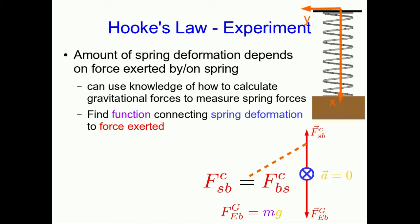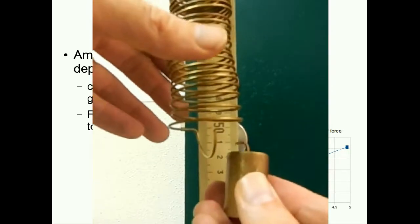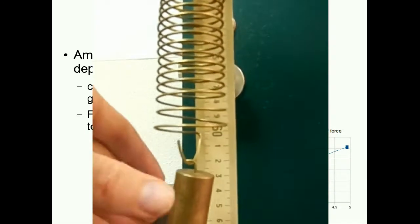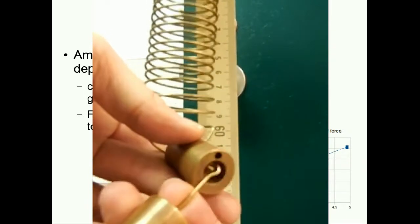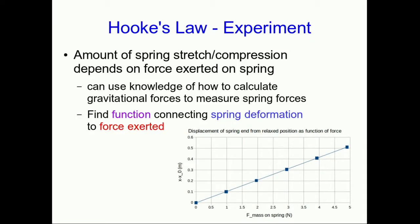I'm going to set an x-axis along the spring, so that the x-component of our force and the x-component of the displacement of the end of the spring have signs associated with them. We hang some mass off of the spring and see how much it stretches, and hang some more mass and see how much more it stretches, and now we plot the x-component of its displacement versus the x-component of the force exerted on it. And we see that it's a lovely straight line. That's great. Linear functions are really easy to deal with.